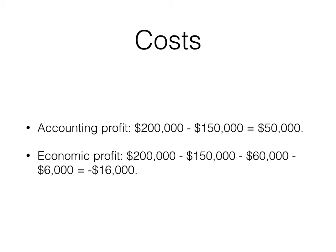Therefore, the economic profit is negative $16,000. Nick is actually incurring a cost of owning the restaurant because he's giving up $6,000 in interest income and he gave up a $60,000-a-year job.